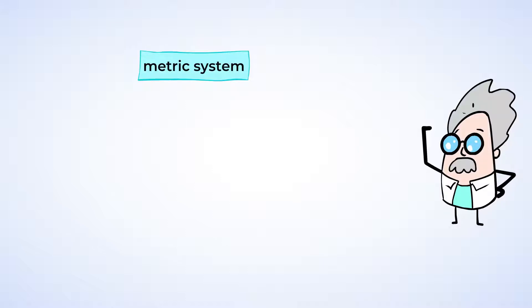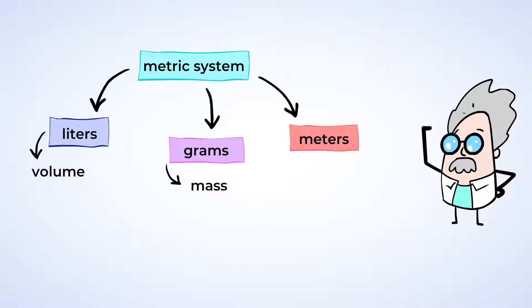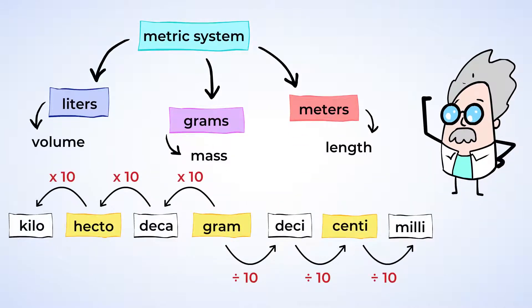The metric system is the decimal system that uses liters, grams, and meters to measure volume, mass, and length. Just like our place value system, the metric system is a decimal system. This means that to convert, or change units, we would multiply or divide by factors of 10.